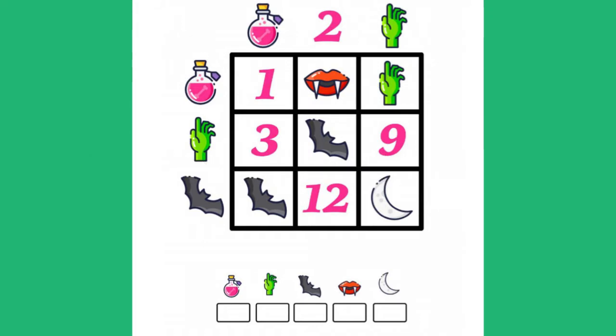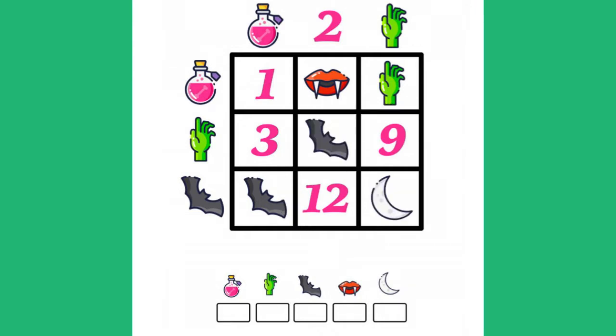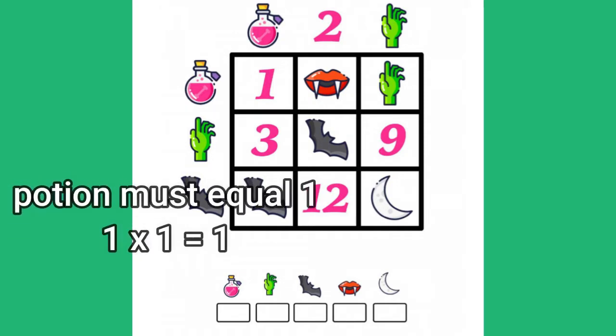In the top left hand corner, the number is 1. So something times something equals 1. Well, I know automatically that the potion must be 1 because 1 times 1 equals 1. So potion equals 1.